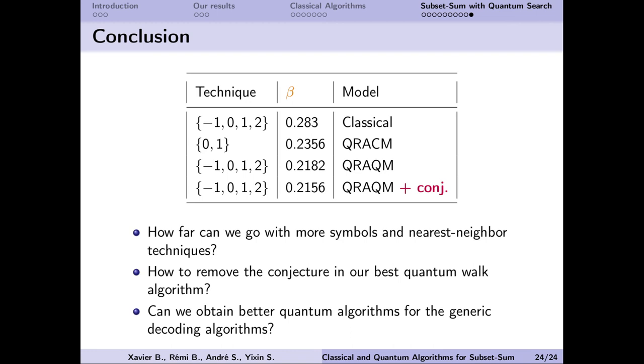One open question is thus, how far can we go with this method? Another open question is about the conjecture on the quantum walk updates that we were not able to remove completely. We probably need to update the MNRS quantum walk framework to solve this problem. A third open problem is that since the subset sum problem and the general decoding problem share some similarities, can we obtain better quantum algorithms for the general decoding problem, especially in the weaker quantum memory model. That will conclude my talk. Thank you for listening.